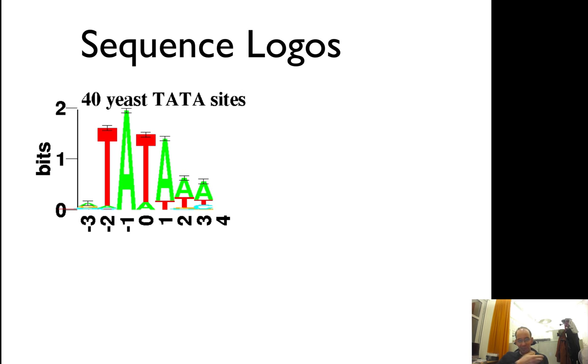If you do a plot where the height of a letter or position depends on the information in that position, it's perfectly conserved if you have log two, meaning you have two bits of information in one position. The trick is that you divide this height into the frequency of each nucleotide in that position. So if it's 90% T's, the height of T is 90% and A is 10%.